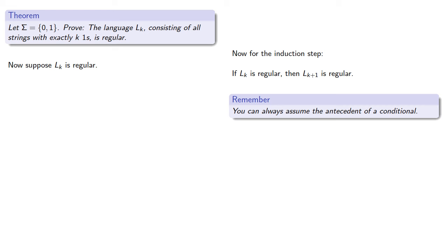And again, the last line of the proof is what we've proven, but we don't have to write it last. So let's go ahead and write down our conclusion, Lk plus 1 is regular, and see how we can get there.